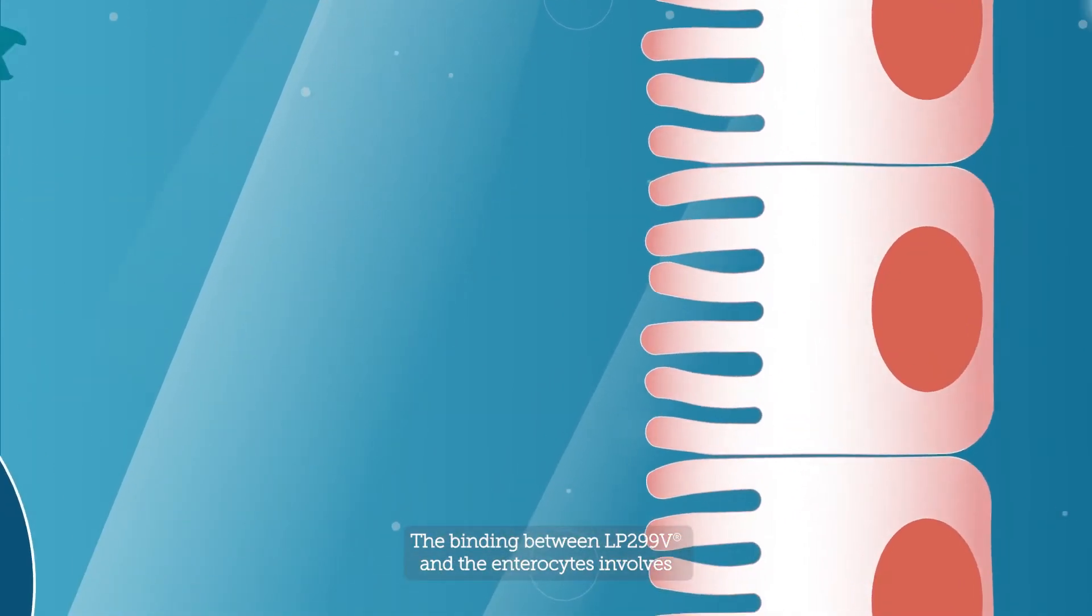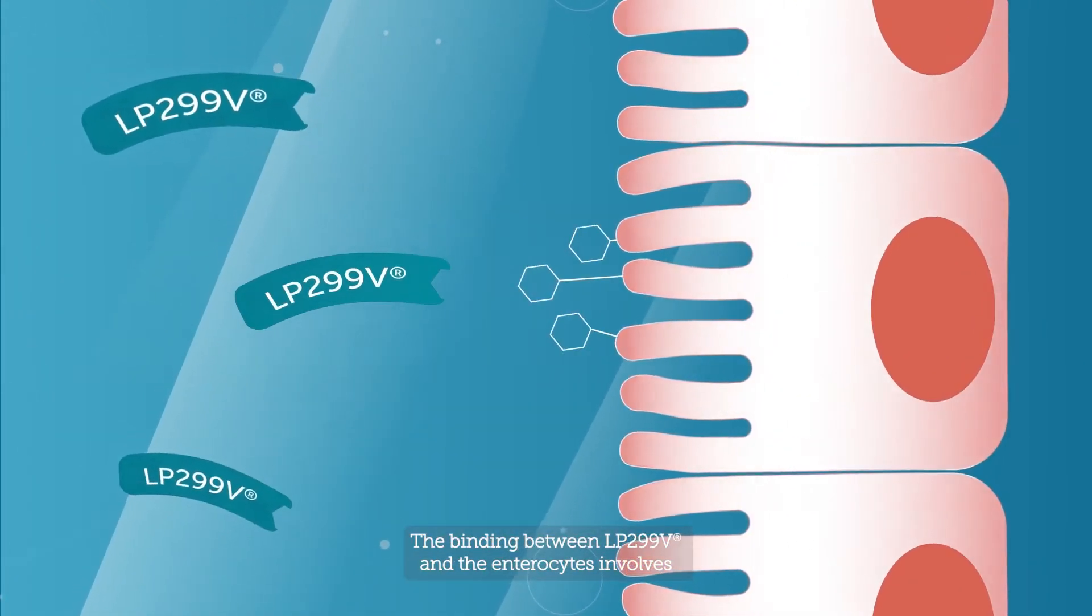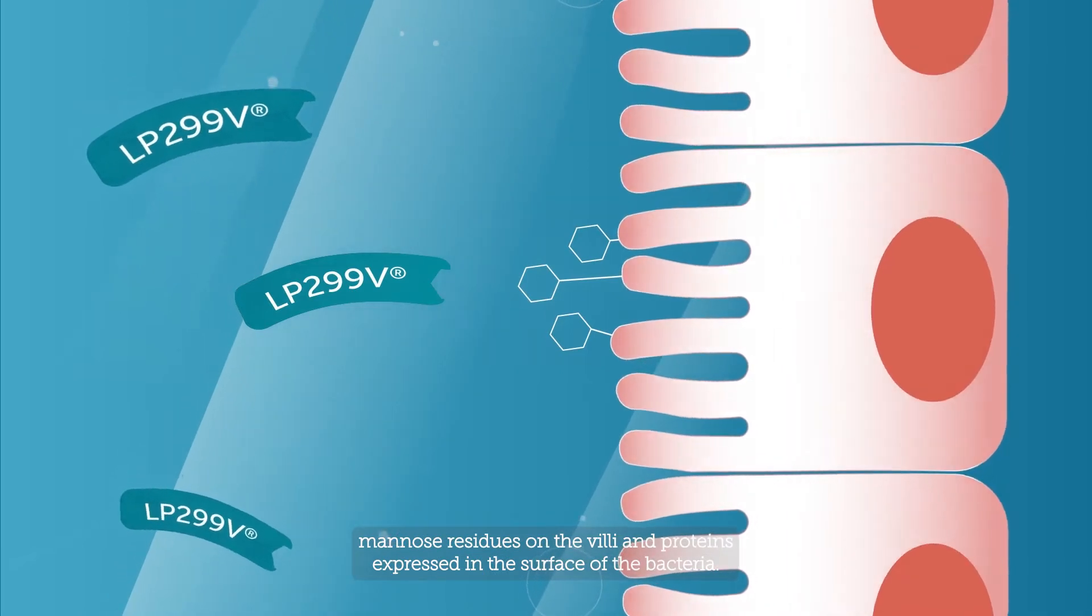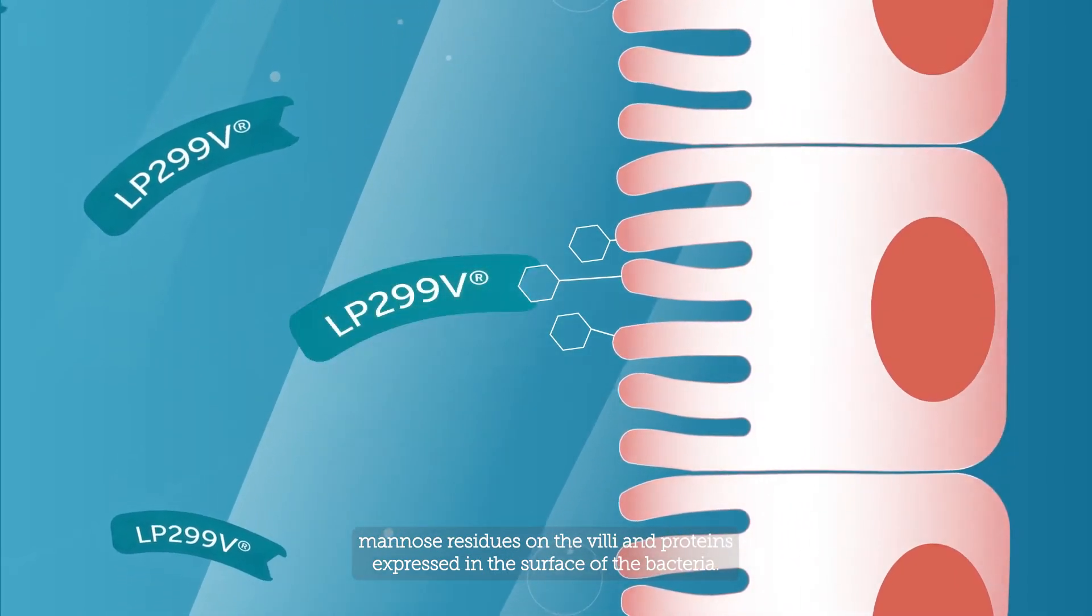The binding between LP299V and the enterocytes involves mannose residues on the villi and proteins expressed on the surface of the bacteria.